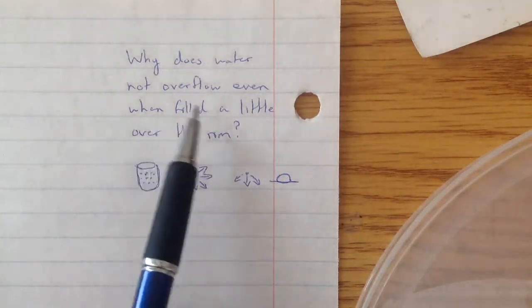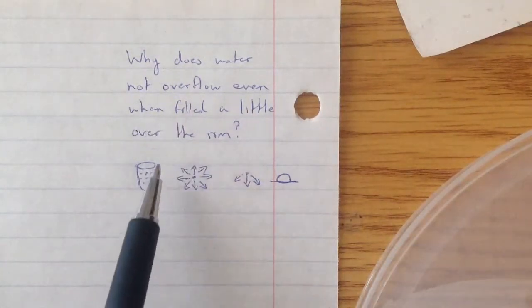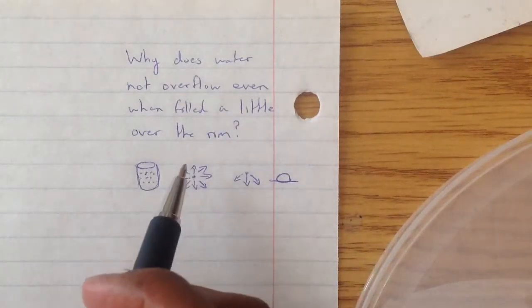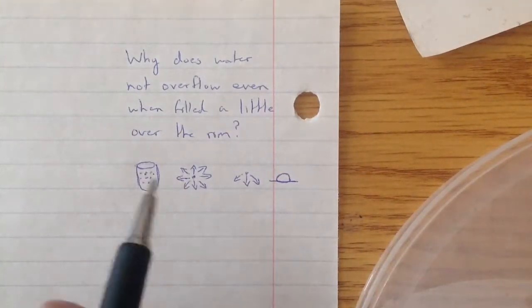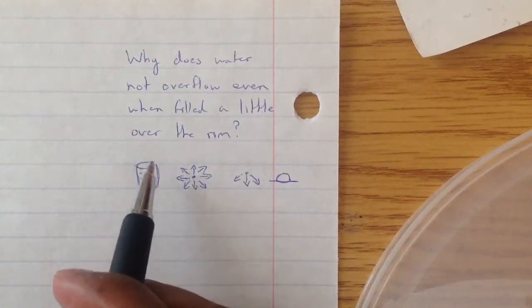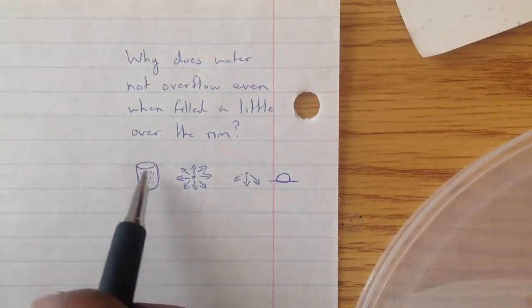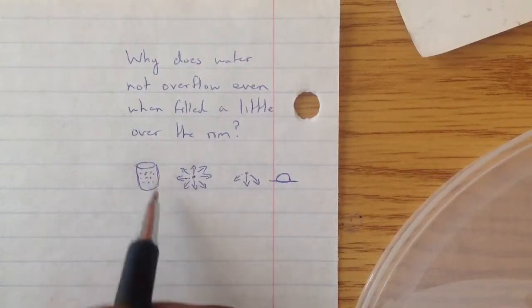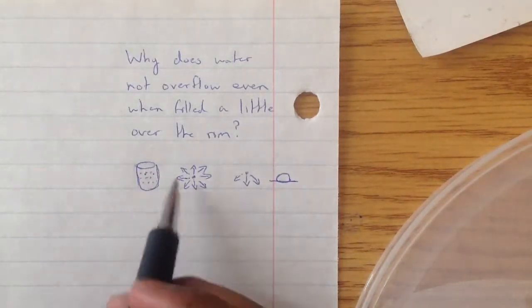Why does water not overflow even when filled a little over the rim? That makes sense, right? It should flow over because where the glass ends, the water should start falling out, but it doesn't. You can have a little more water than what's usually required.